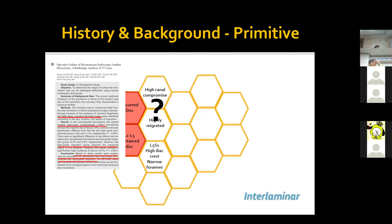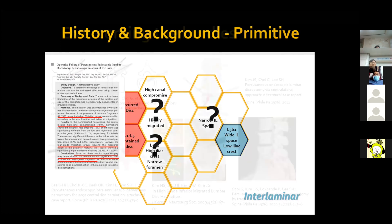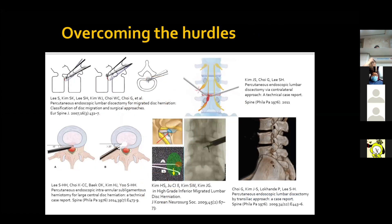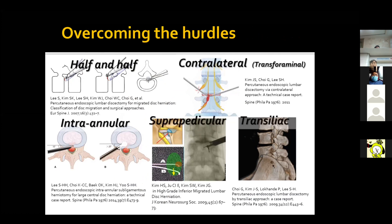The transforaminal approach also has much limitation at the L5-S1 level with a narrow, prominent iliac crest. So the interlaminal approach was introduced as an alternative to overcome such limitations, but use of the interlaminal approach is also limited to wide interlaminal space. Many endoscopic surgeons did their best to overcome these hurdles by developing several transforaminal techniques such as the hopping, contralateral, suprapedicular, and transiliac approaches.